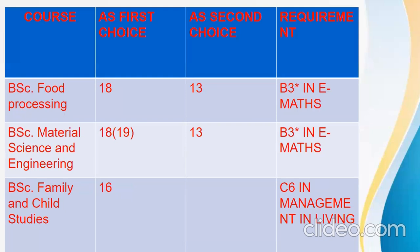BSc Food Systems is 18 as your first choice and 13 as your second choice. The requirement is B3 in elective maths. BSc Material Science and Engineering is 18 as your first choice for males and 19 for females, 13 as your second choice, B3 in elective maths. BSc Family and Child Studies is 16, with a requirement of at least C6 in Management and Living. If you didn't do Management and Living, you cannot qualify for the course — unless maybe you took it as a non-elective additional course.